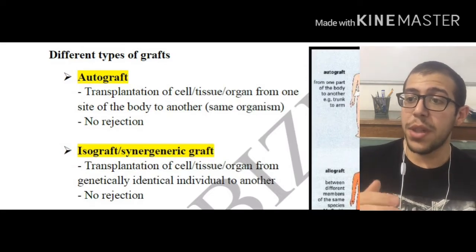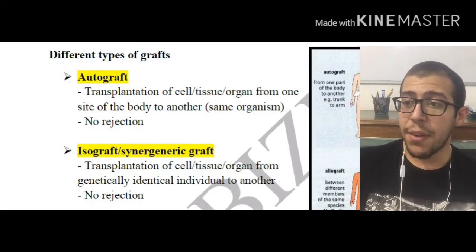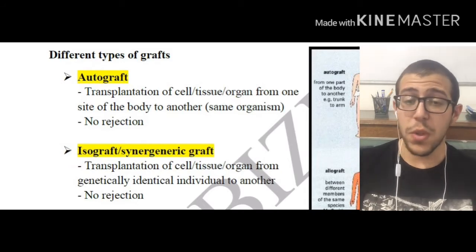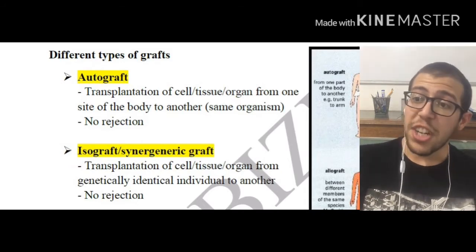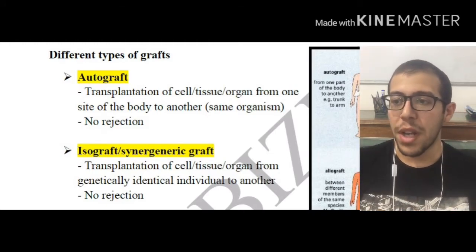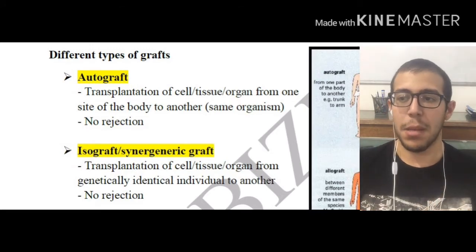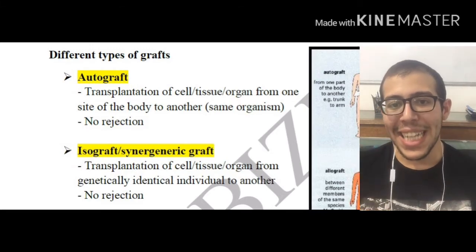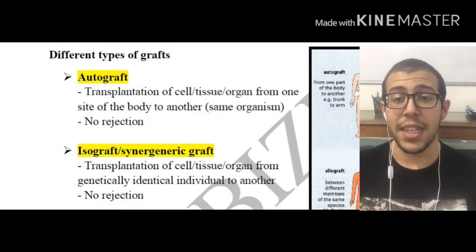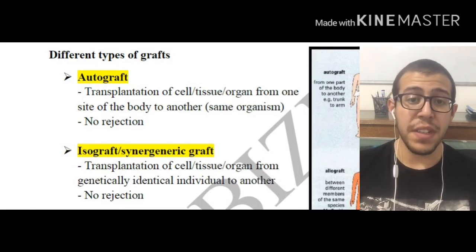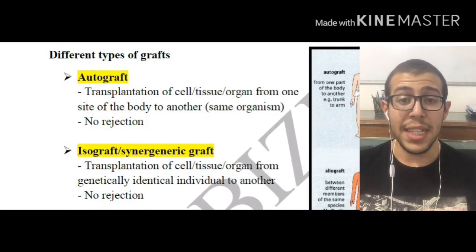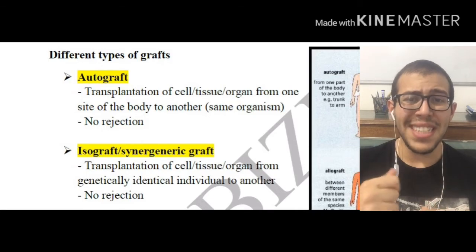Next we have isografts, or syngeneic grafts. These involve transplantation of the cell, tissue, or organ from one genetically identical individual to another. When we mean genetically identical, in mice it is possible to get almost 100% genetically identical individuals. Obviously in humans it is going to be less common, however when we're talking about identical twins it is near possible.